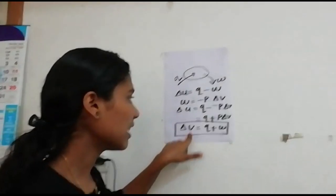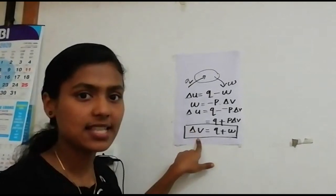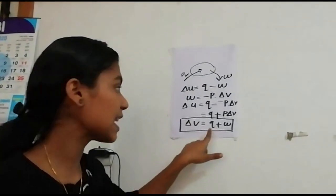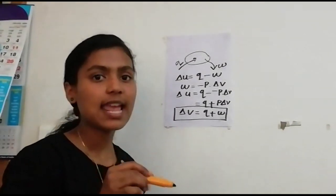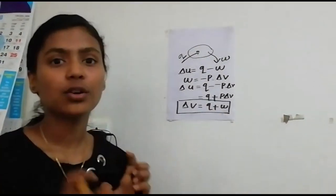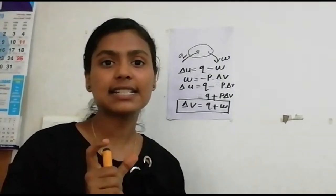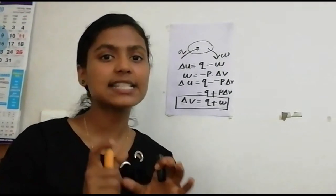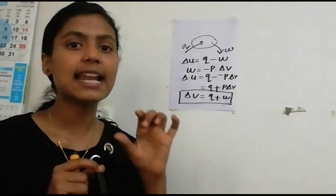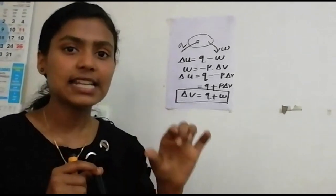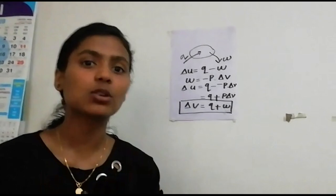This is the mathematical representation for the first law of thermodynamics. From this law, we can understand that the internal energy change of a closed system is equal to the energy transfer to its boundary as heat and work done. In a closed system, the internal energy change will be equal to the heating and work done in the current environment.